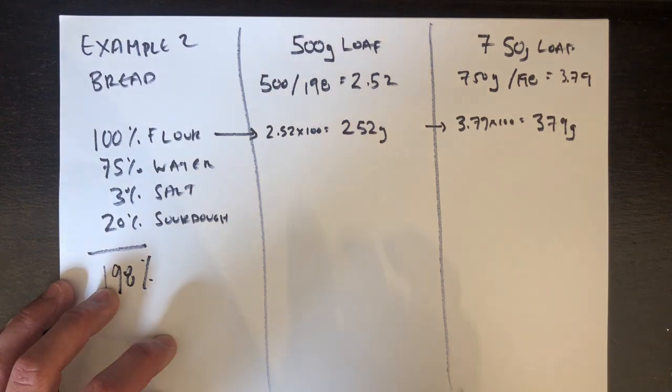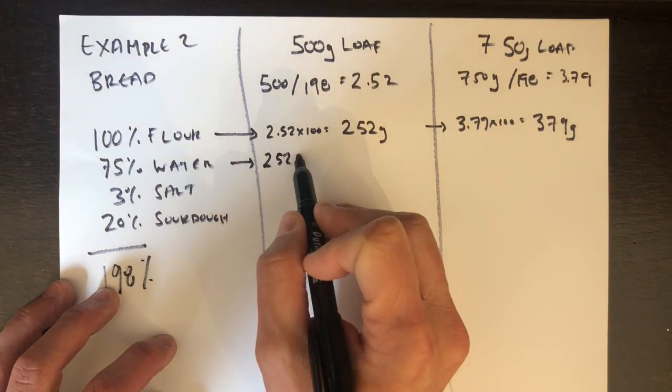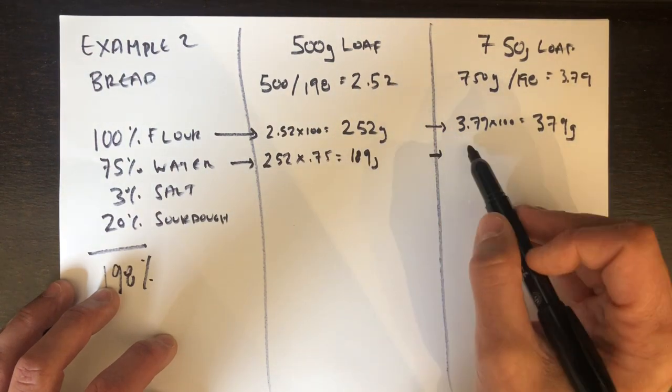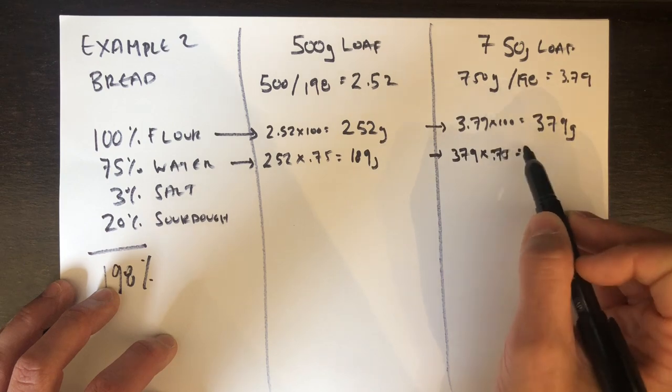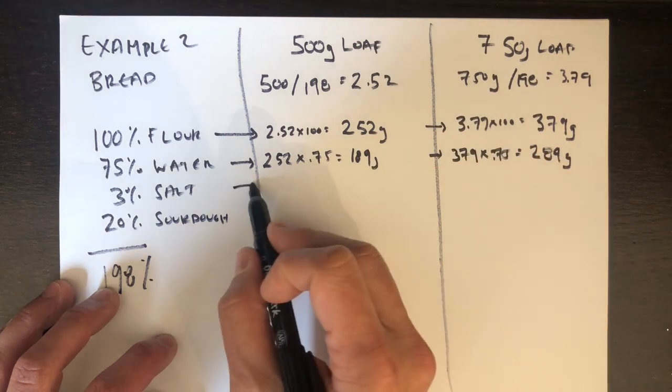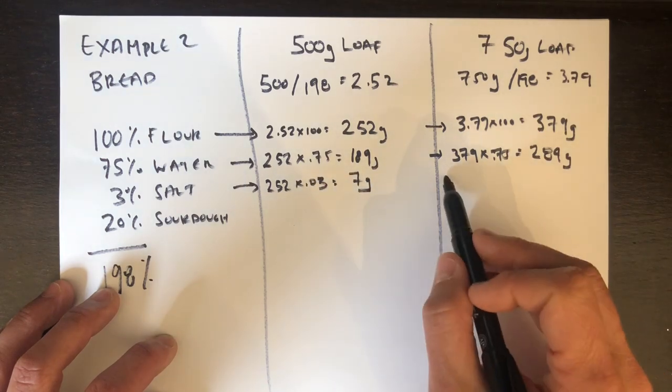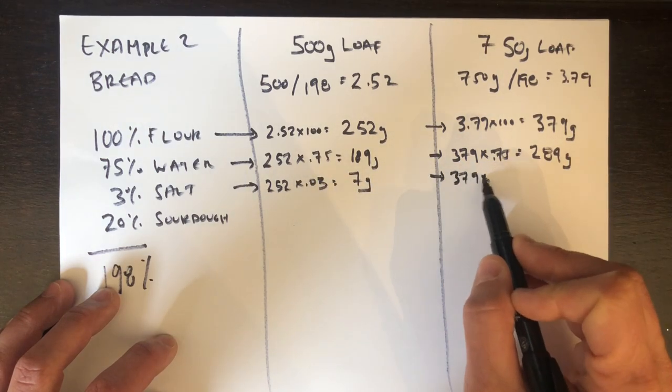With these higher percentage loaves, it's pretty easy just to say half the total grams, the total weight of the loaf, is for flour. That's a good rule of thumb to start there. And then I'm just going to start filling in my table here. It's pretty easy. Everything again is just related back to the amount of flour I'm using. So 252 times 75, that's 189.